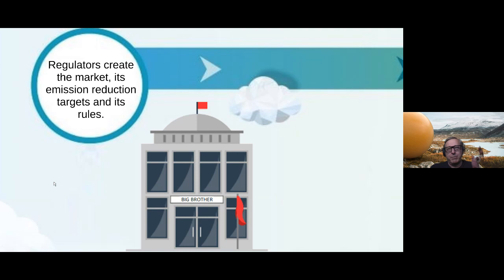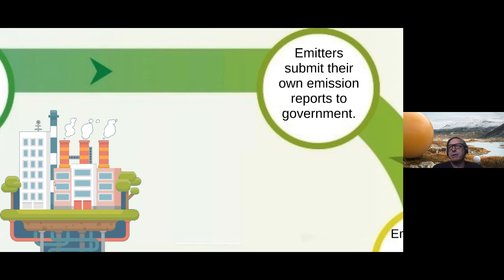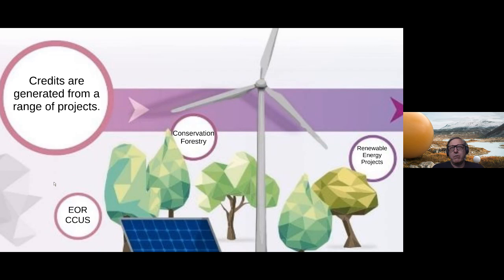From a process perspective: the regulator creates the market through regulation and sets emission reduction targets. Emitters measure emissions, which are verified by a third party, then submitted to government. Meanwhile, elsewhere in the province, individuals or organizations can take action to reduce greenhouse gas emissions. Carbon credits can be generated from a wide variety of projects — enhanced oil recovery, carbon capture storage and utilization, forestry, renewable energy, energy efficiency, aerobic composting, methane abatement projects, and more.